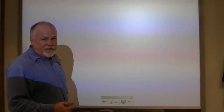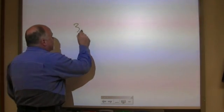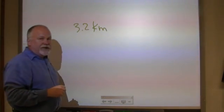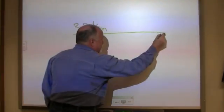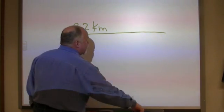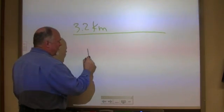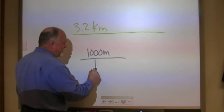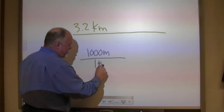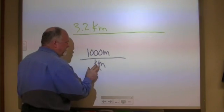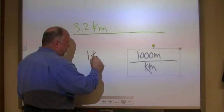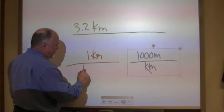Sometimes in conversions, it's the simple stuff that gets us confused. 3.2 kilometers, and you're asked to convert that to meters. So you do that, and then you have to have a conversion factor. 1,000 meters is the same as 1 kilometer, and 1 kilometer is the same as 1,000 meters.